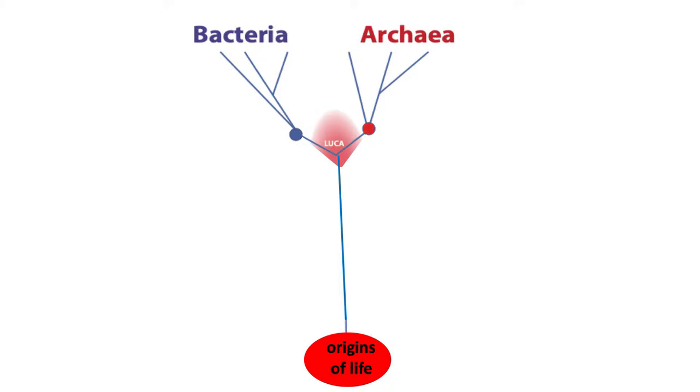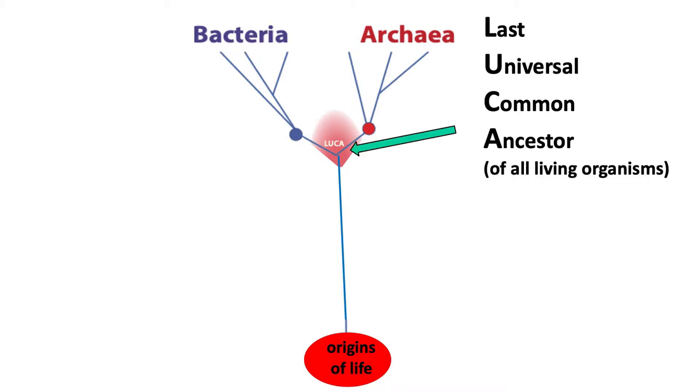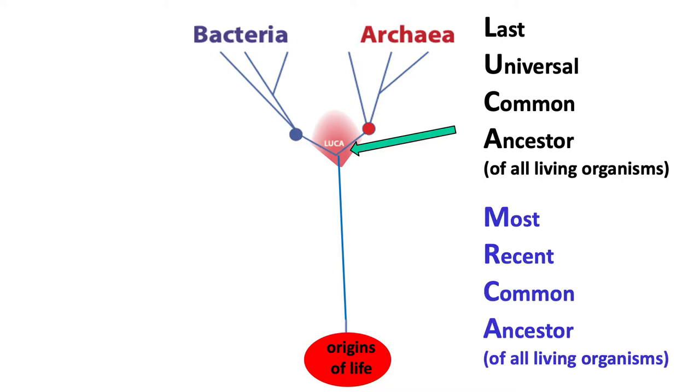Let's look at this phylogenetic tree and we'd like to know what the origin was. Was it more like bacteria or was it more like the archaea? And we have a LUCA there, L-U-C-A. Remember that LUCA stands for Last Universal Common Ancestor of All Living Organisms. Now it's also sometimes called the Most Recent Common Ancestor, M-R-C-A, of all living organisms.